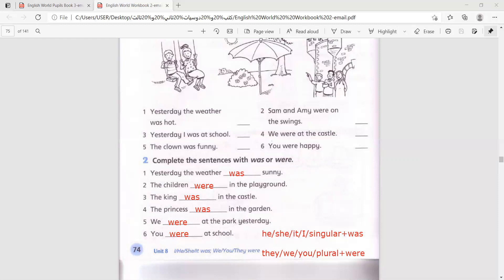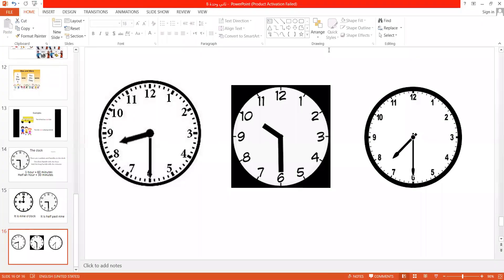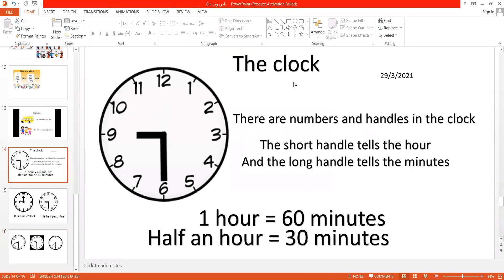Have you finished? Great job! Now let's take a look at this new lesson. We are going to learn about the clock. This is the clock. There are numbers and handles in the clock. The short handle tells the hour and the long handle tells the minutes. These are the numbers from 1 to 12 and these are the handles. One hour is 60 minutes, half an hour is 30 minutes. Pause and copy on your notebook.